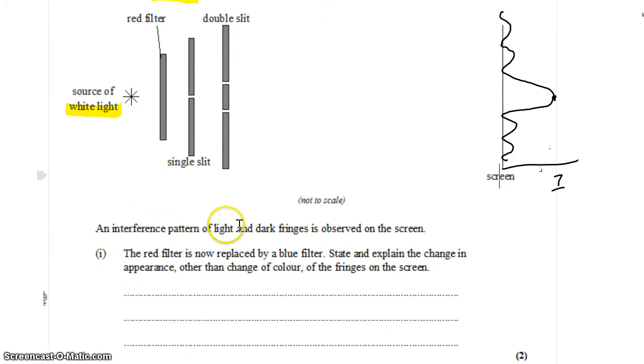So the question says an interference pattern of light and dark fringes is observed on the screen. The red filter is now replaced by a blue filter. State and explain the change in appearance other than the change of color of the fringes on the screen. So how do they look different besides being blue?